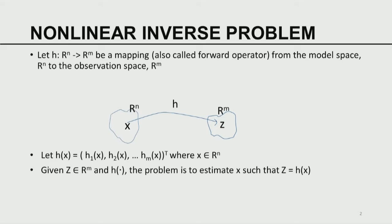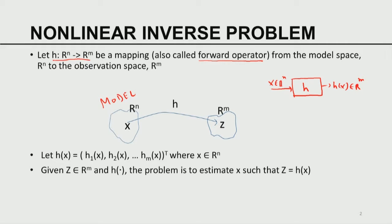Let H be a map — that means H is a vector-valued function of a vector. X is a vector in Rn that maps into Rm; H of x belongs to Rm. In meteorological and geophysical context, it is also called the forward operator. H is a map from the model space Rn to the observation space Rm.